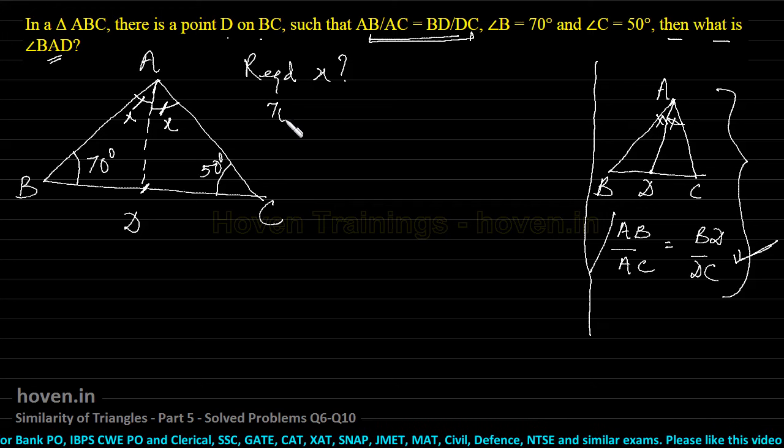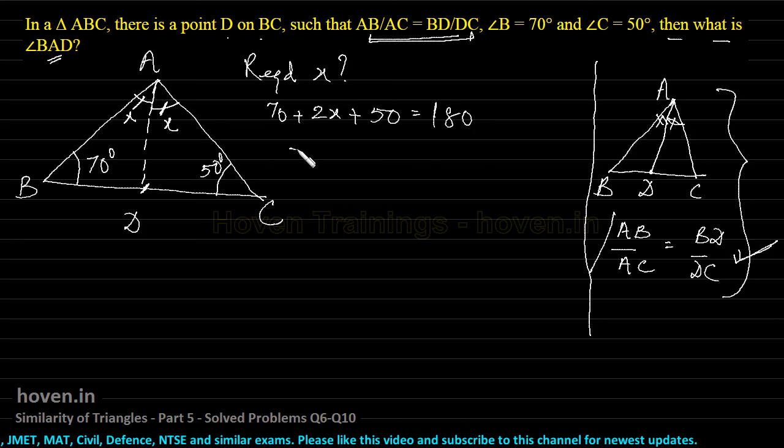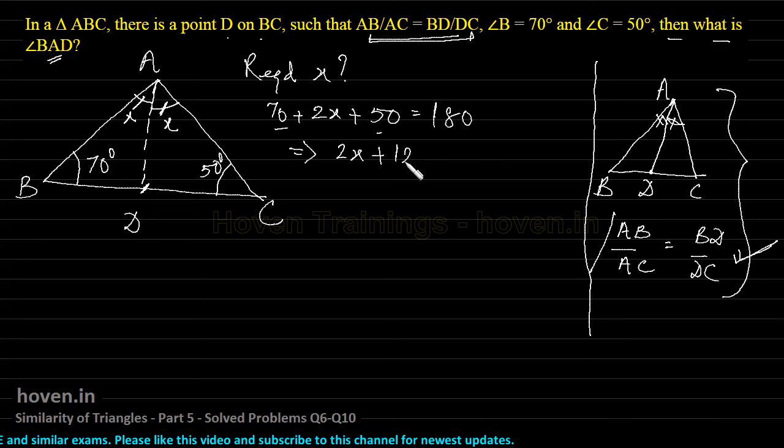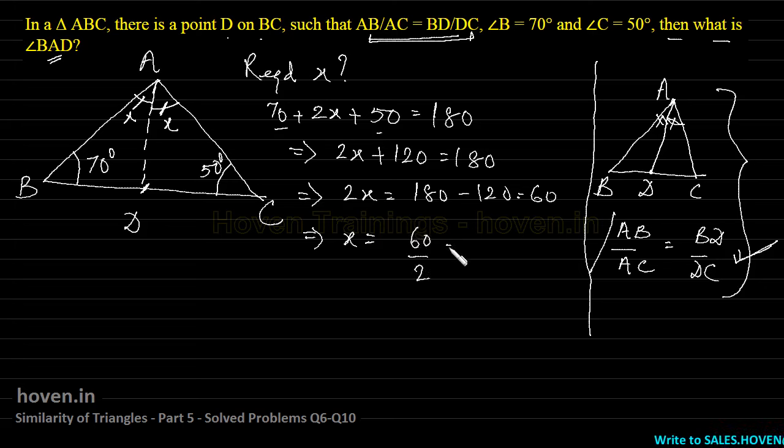We can say 70 plus x plus x, which is 2x plus 50, should equal 180. This implies 2x plus 120 equals 180, which implies 2x equals 180 minus 120, which is 60. Therefore x is 60 by 2 equal to 30 degrees, which is the answer.